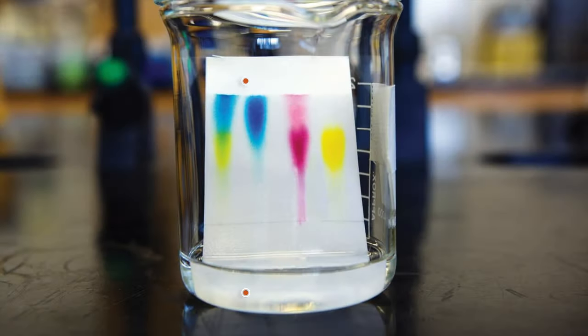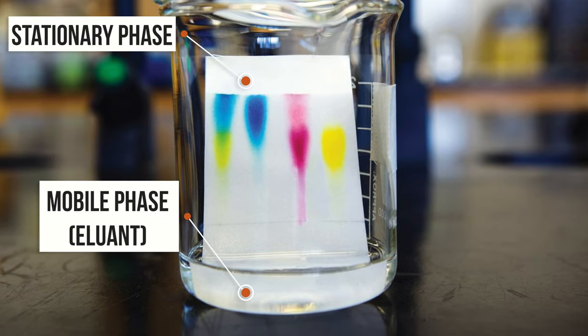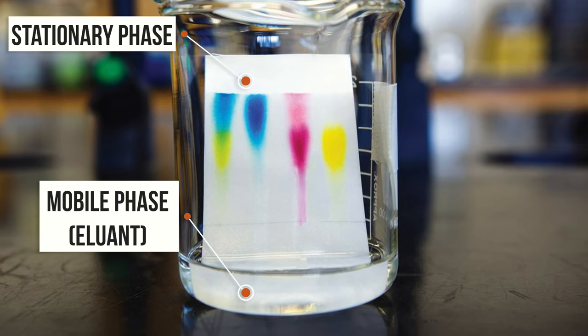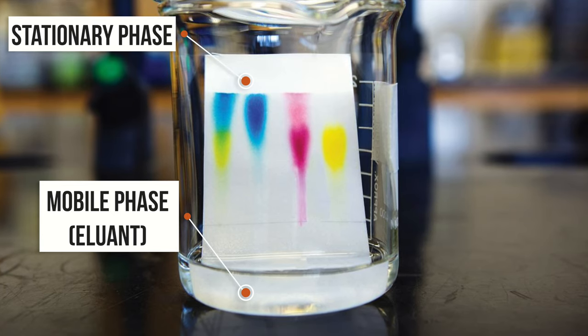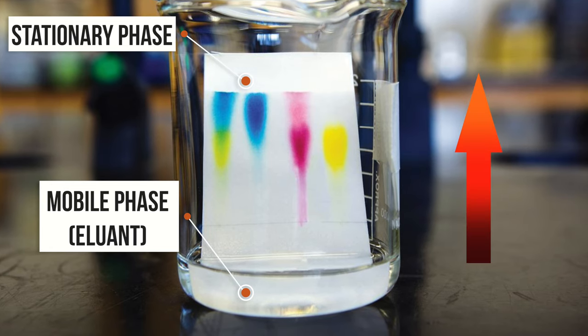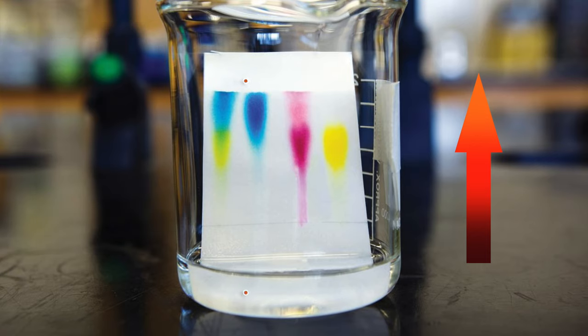The two elements of chromatography are the stationary phase and the mobile phase. The mixture is placed on the stationary phase. The mobile phase, a mixture of solvents, or eluents, passes over the mixture and continues to pass through the stationary phase, carrying along the components of the mixture.